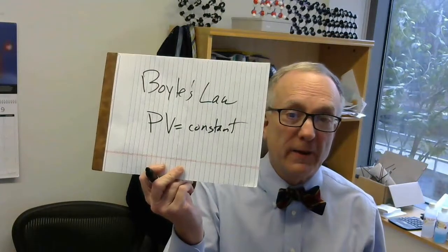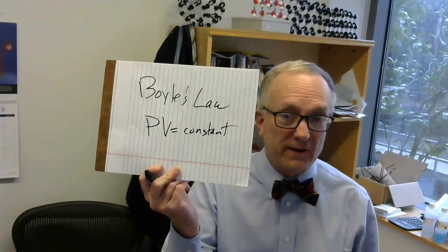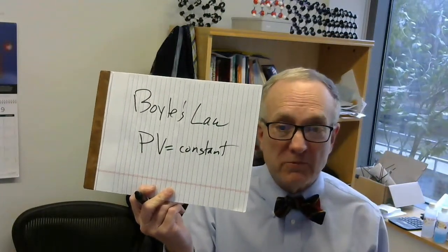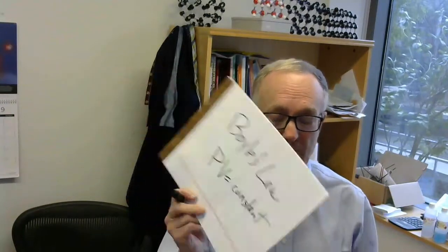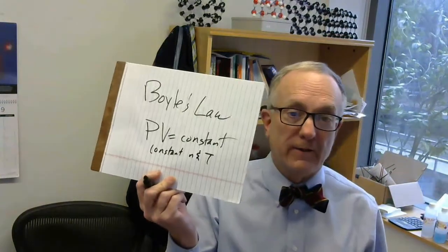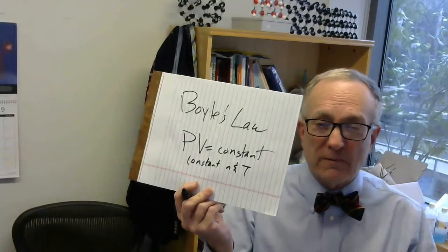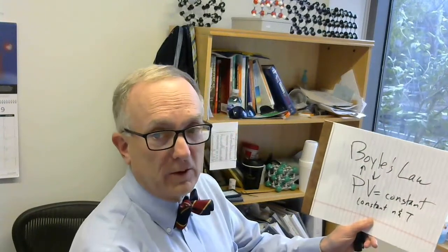Boyle's Law says that pressure times volume is a constant if you have a constant number of moles and the temperature is constant. It's a constant N and T. So if pressure times volume is a constant, that will mean that if the pressure goes up, the volume correspondingly has to go down. Or if the pressure is going down, the corresponding volume has to be going up in order to keep that a constant.